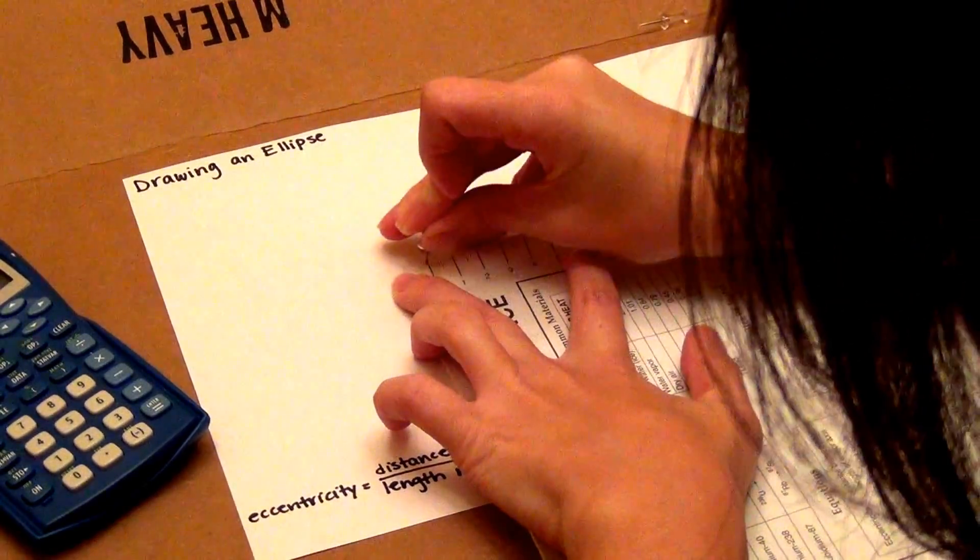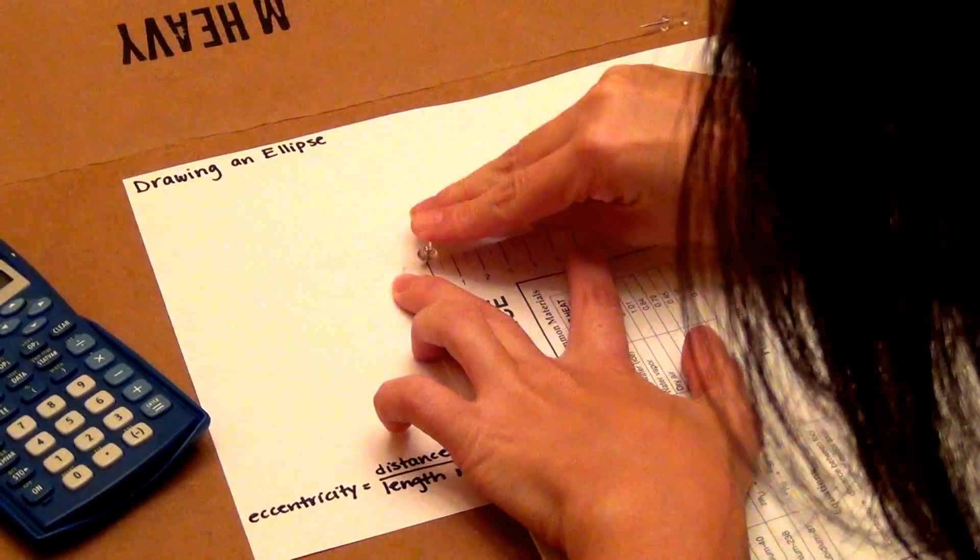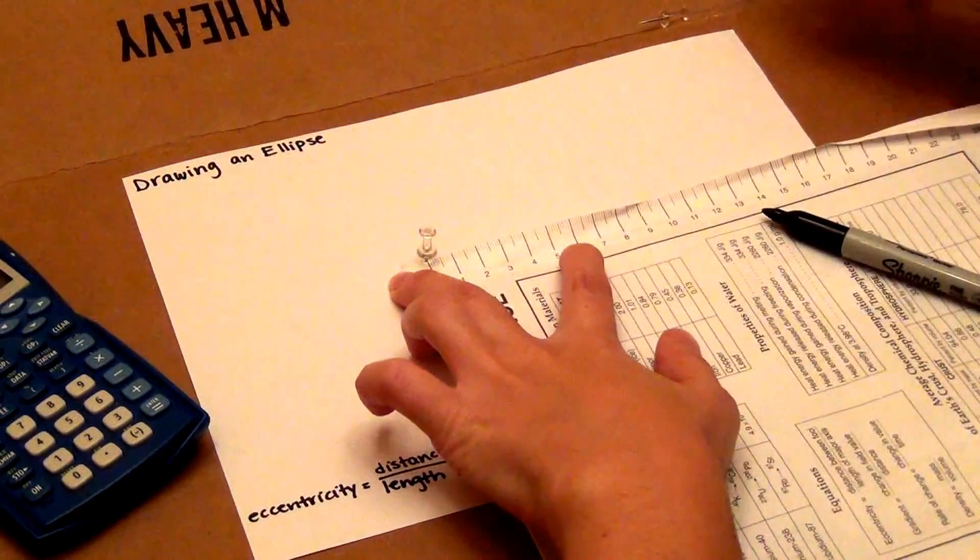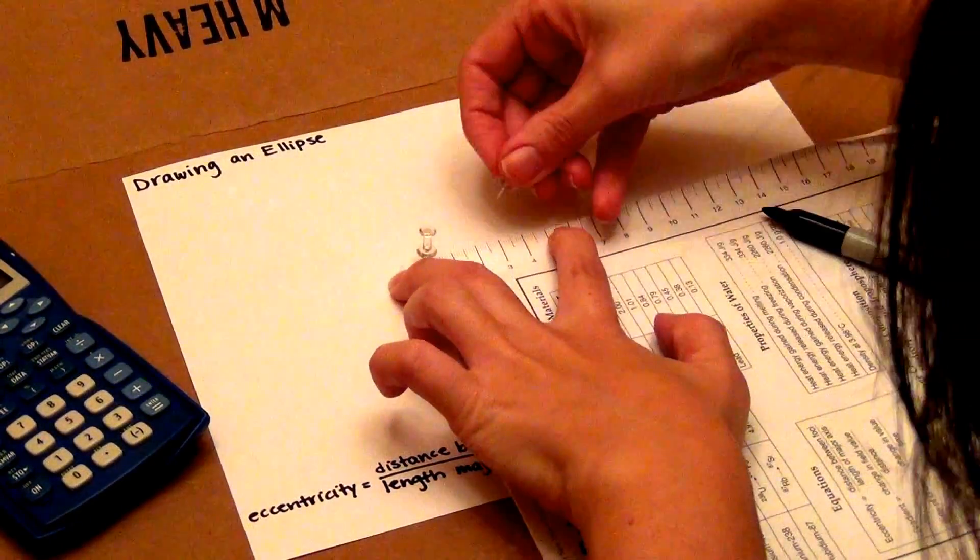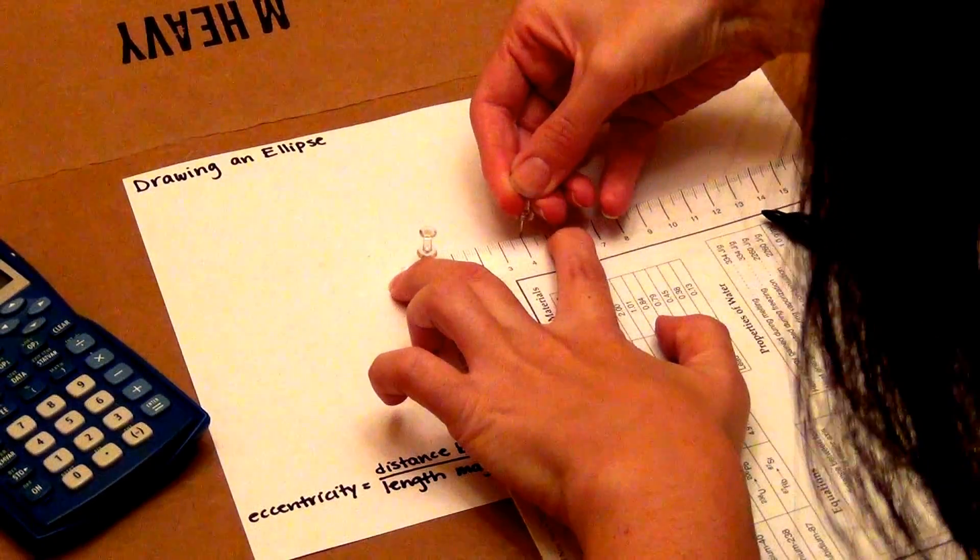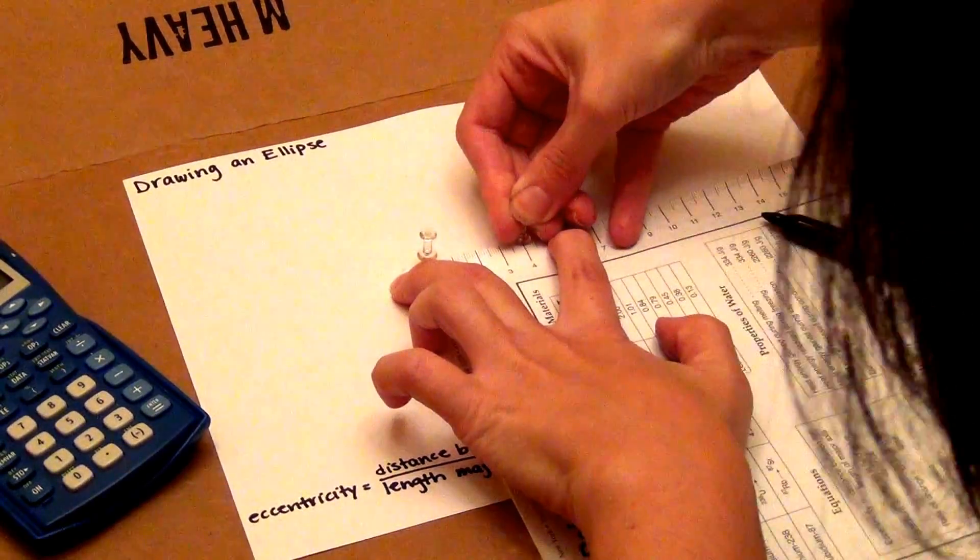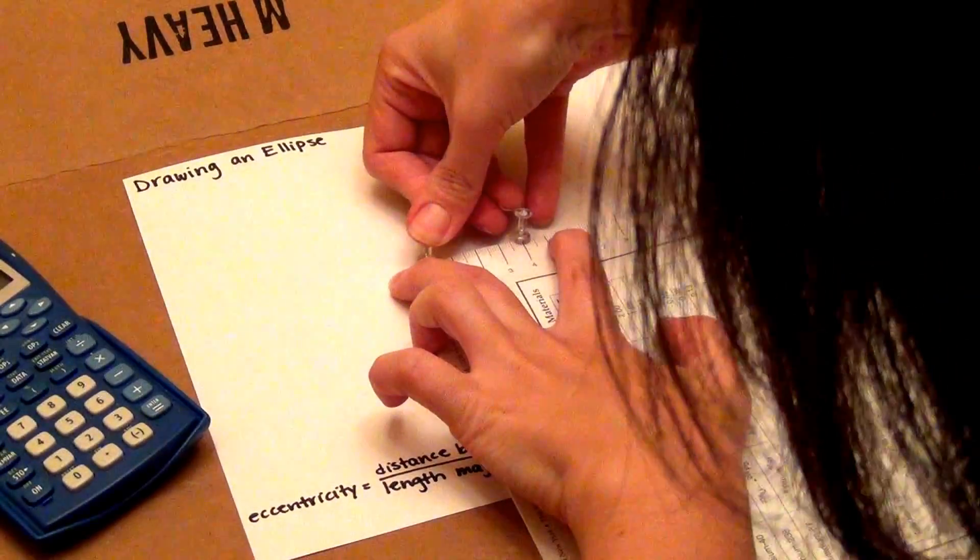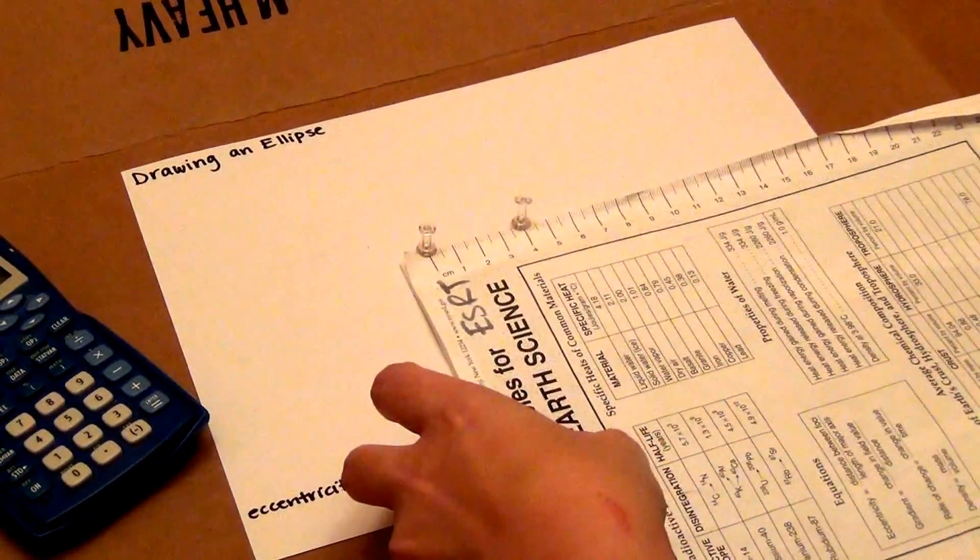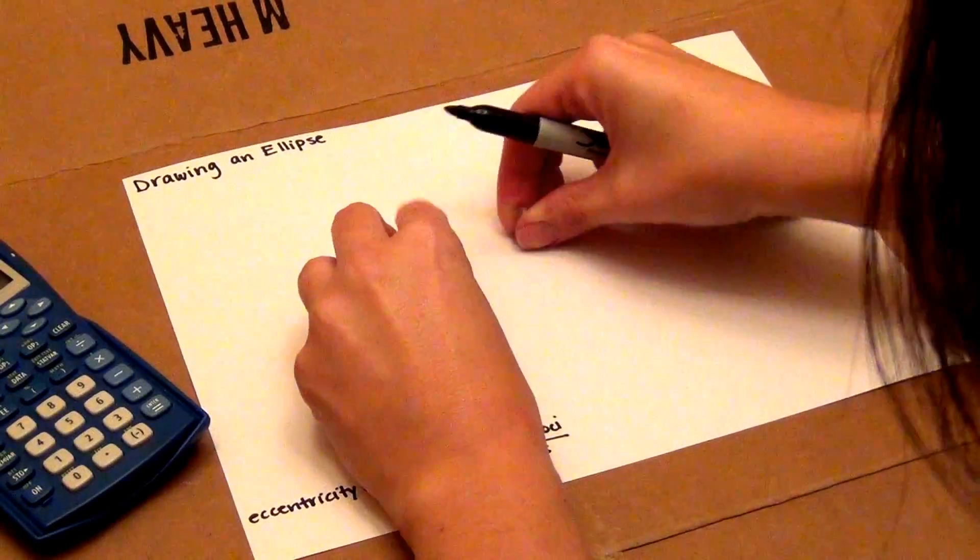So I'm going to put one thumbtack into the cardboard at 0 centimeters and one thumbtack into the cardboard at 4 centimeters. Push it down as far as you can and then you can move the reference table out of the way.